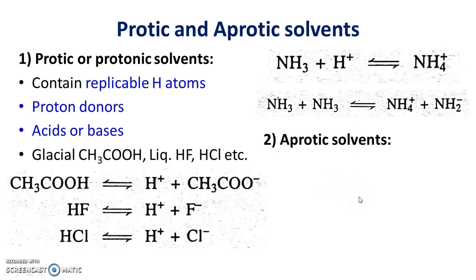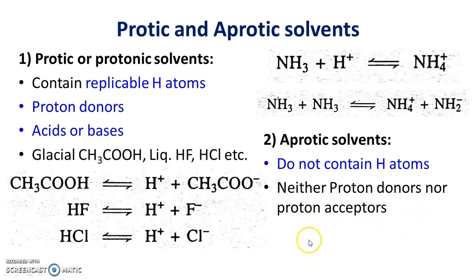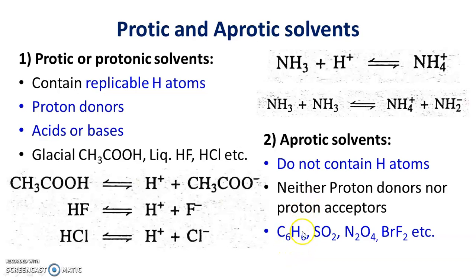Aprotic or non-protonic solvents are those which neither donate nor accept protons and do not contain transferable hydrogen atoms. An example is benzene — it contains hydrogen, but this hydrogen cannot be transferred, so there is no transferable proton. Therefore benzene is an aprotic solvent. Other examples include sulfur dioxide, N2O4, and BrF2, which are also aprotic solvents.